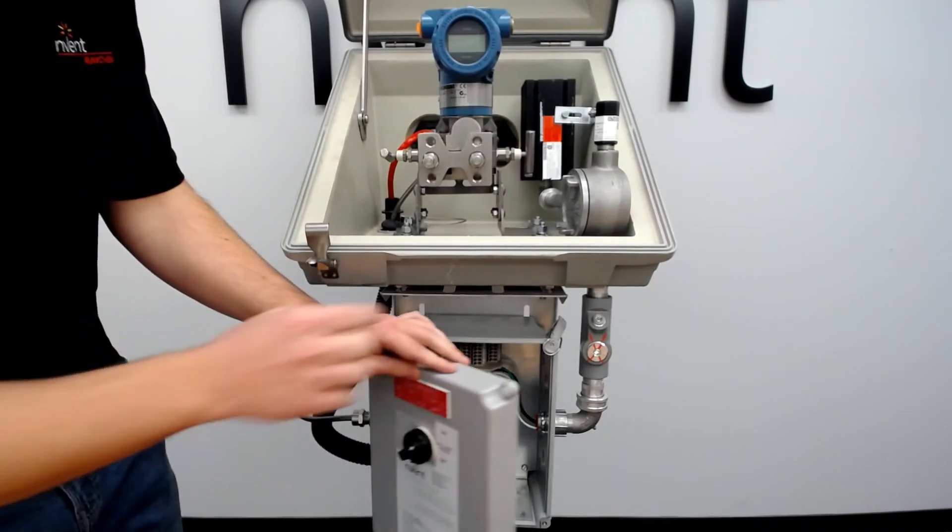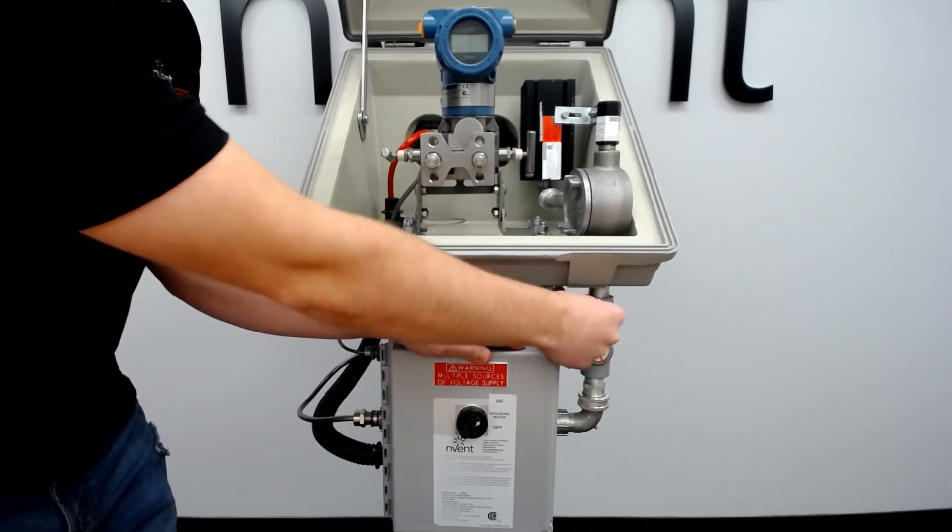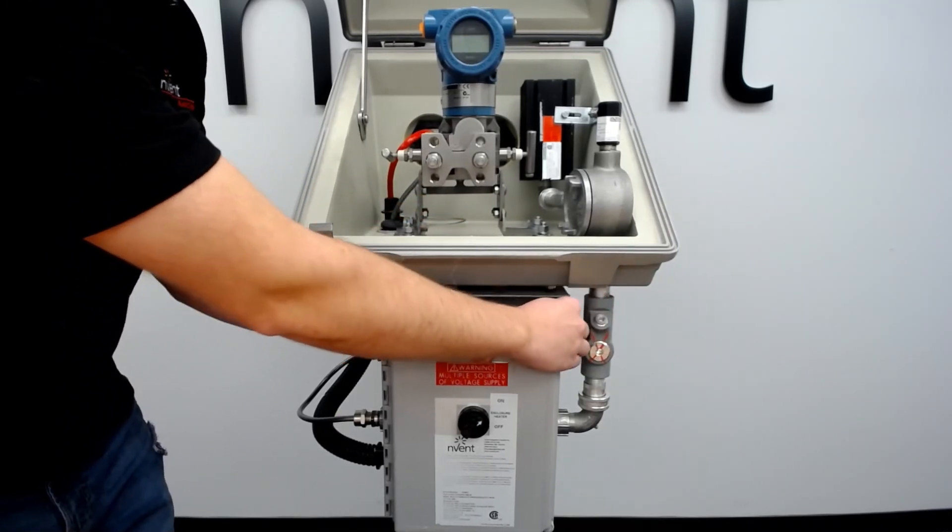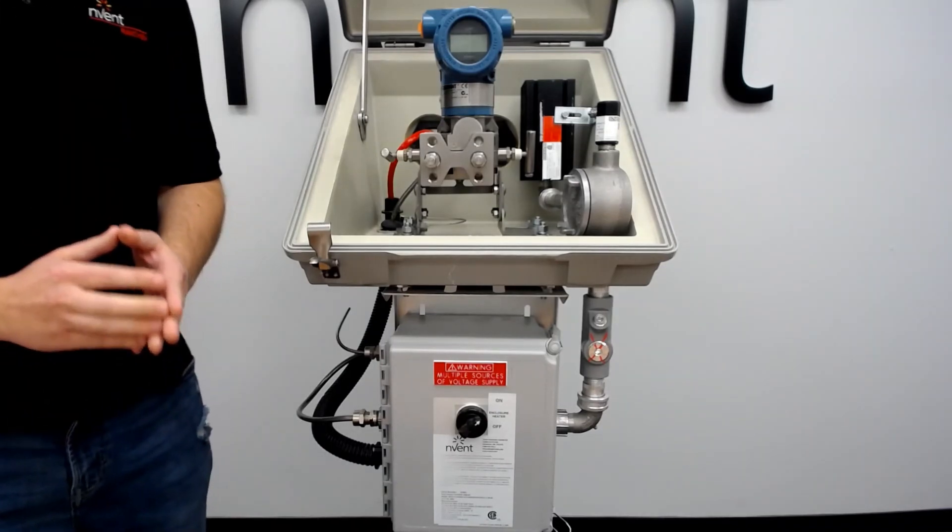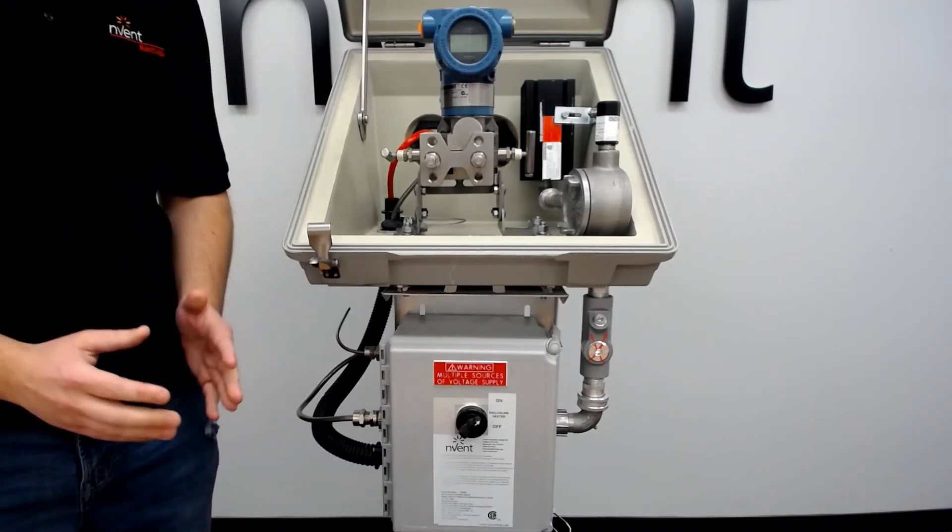One small thing to think about: when you're done with your junction box, make sure you latch it shut to ensure the ingress protection rating is maintained and you don't have any water coming into the junction box.